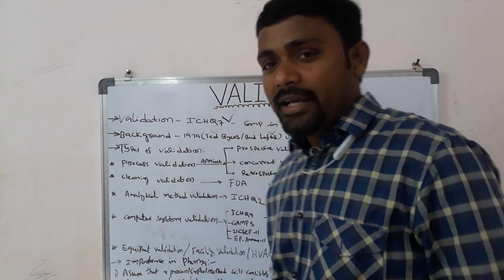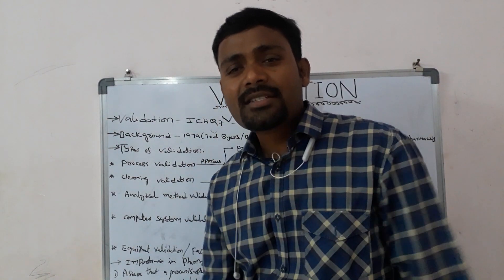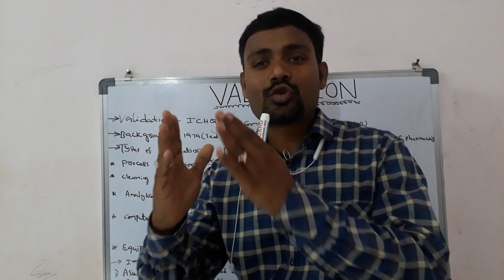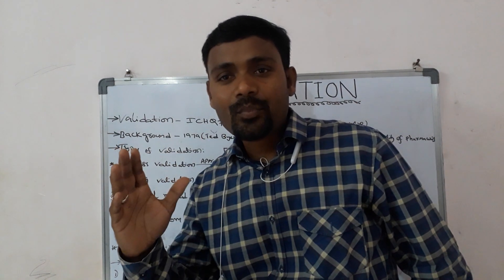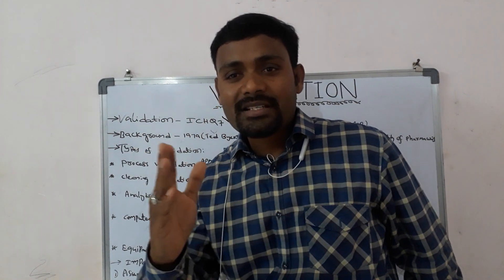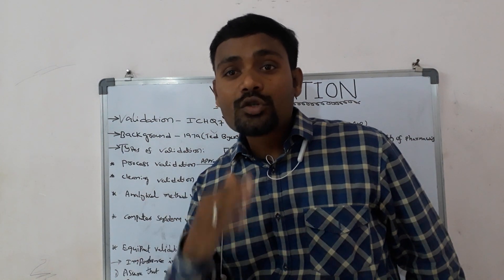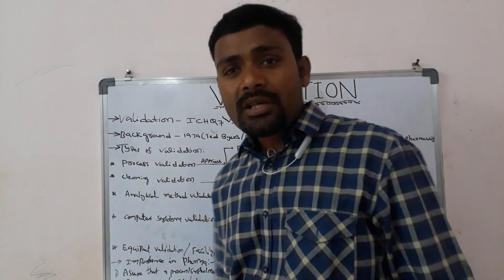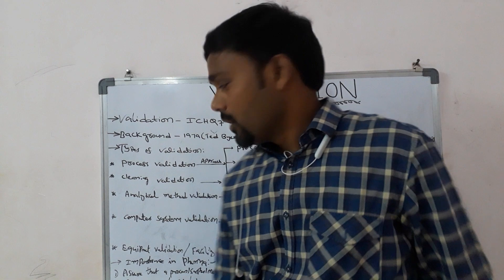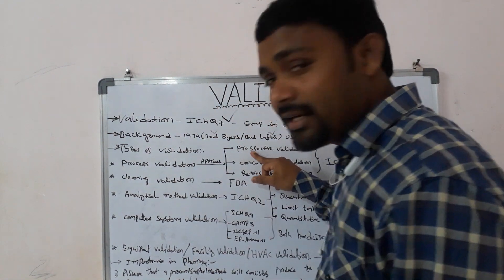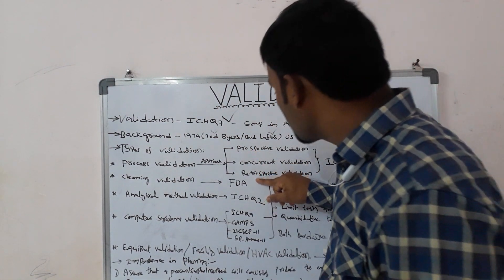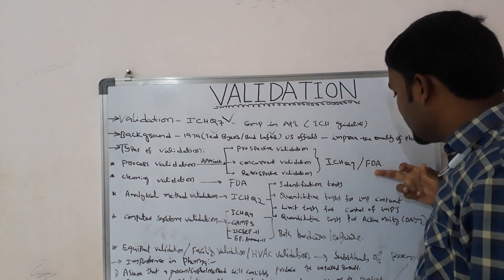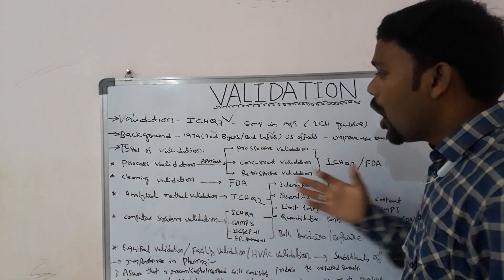Process validation is the collection and evaluation of data from the process design stage through to commercial manufacturing, ensuring the process is capable of consistently producing quality products suitable for its intended use. It is further classified into three approaches: prospective validation, concurrent validation, and retrospective validation. ICH Q7 and FDA guidelines provide guidance on how to approach and conduct process validation.